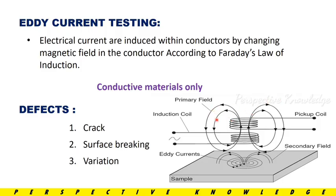We will test the conducting material. We produce the magnetic field and we produce the EMF. That EMF is the Eddy Current. The Eddy Current is circular in shape — electromagnetism flows in a circular shape.